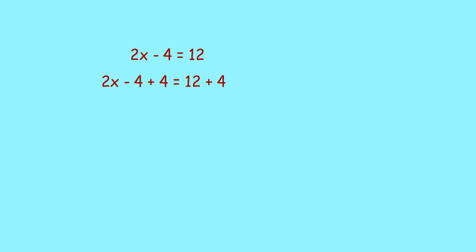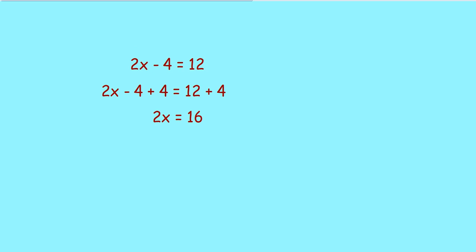So, minus 4 plus 4 is equal to 0. So, 2x is equal to... Now, how do you separate x from here?